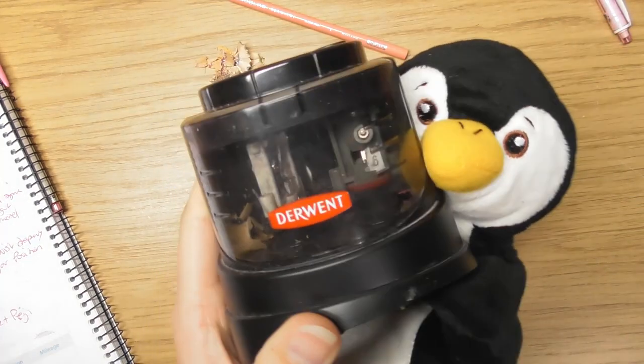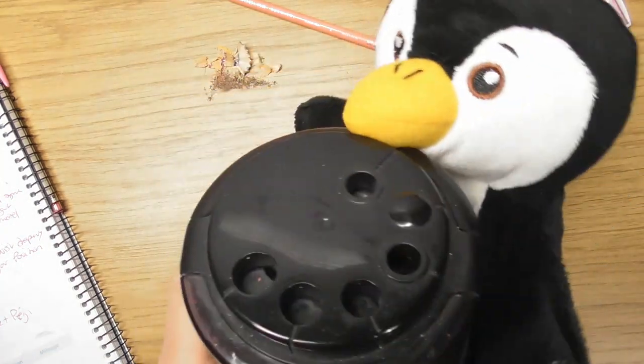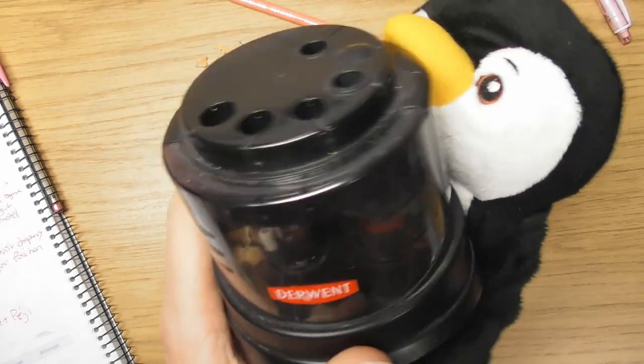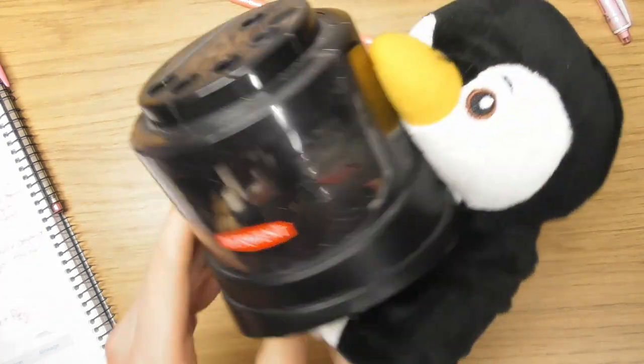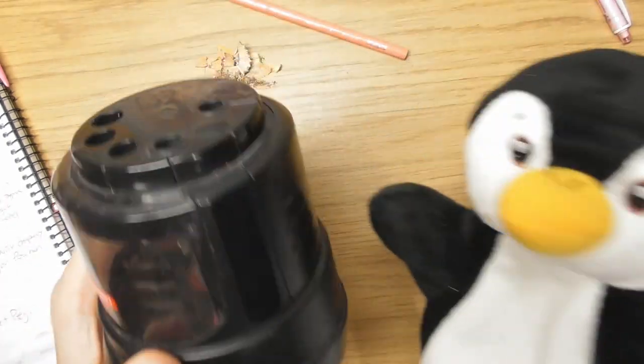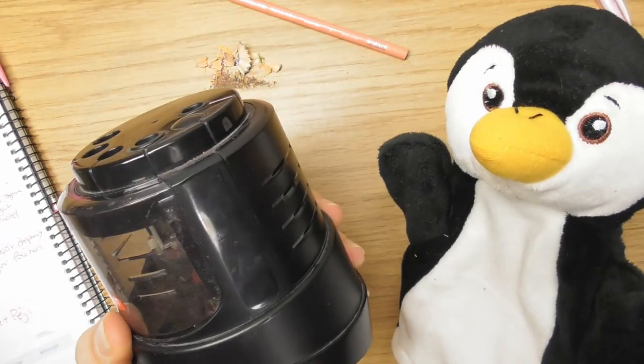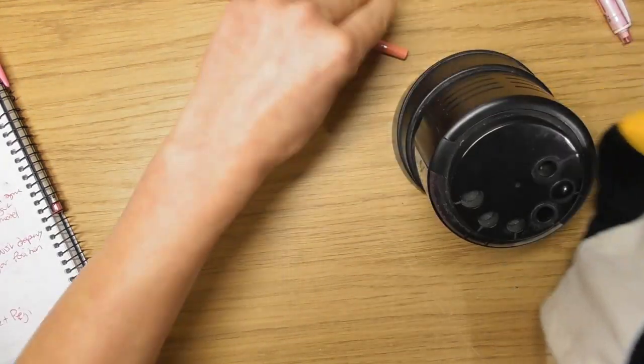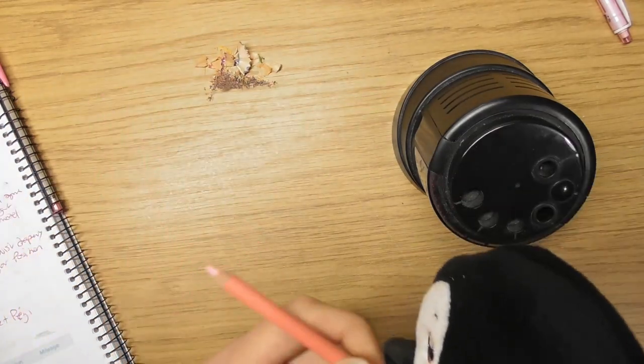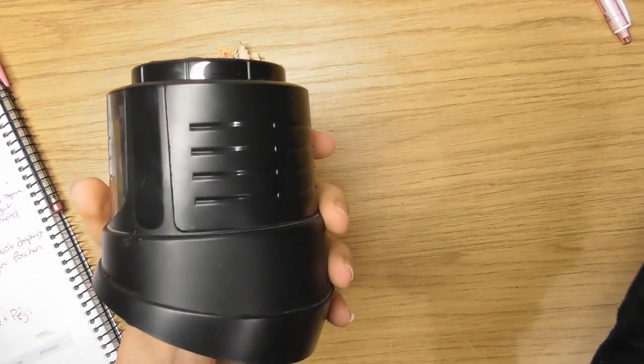That was a look at the Derwent battery operated pencil sharpener. And why do I love it? What's the most, most reason why I love it? It's because it does the job to perfection. It does exactly what you need. Sharpens your pencils, keeps everything nice and tidy, looks cool.